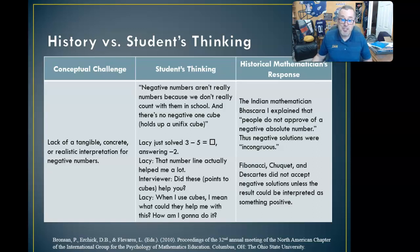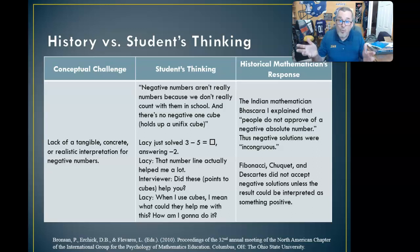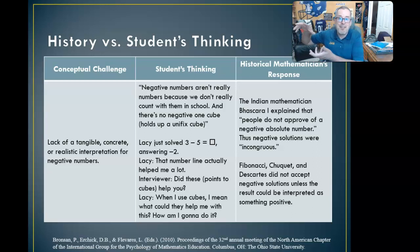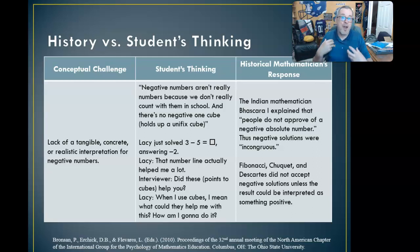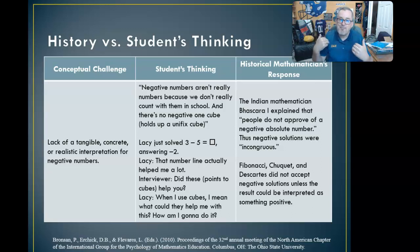Fibonacci, Shukai, and Rene Descartes did not accept negative solutions unless the result could be interpreted as something positive. For example, you might think of negatives as when your bank account is overdrawn — you have a negative quantity. But they would argue it's not really a negative quantity; it's just a quantity classified as an amount you owe versus an amount you have. You could still say $10, but owing it versus having it. Fibonacci, Shukai, and Descartes wouldn't call that a negative — just a $10 owed. It's just a conceptual challenge.